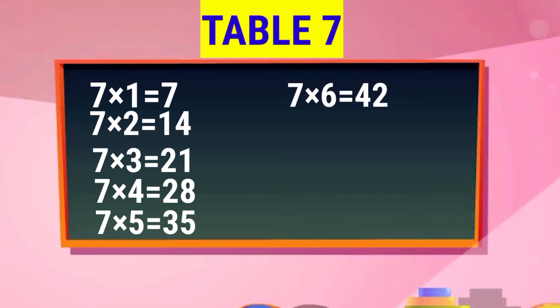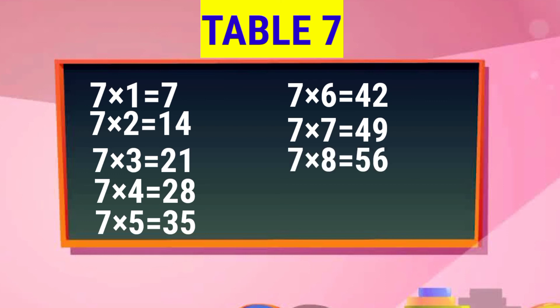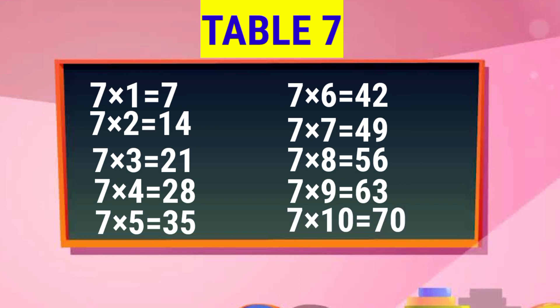7 6s are 42. 7 7s are 49. 7 8s are 56. 7 9s are 63. 7 10s are 70.